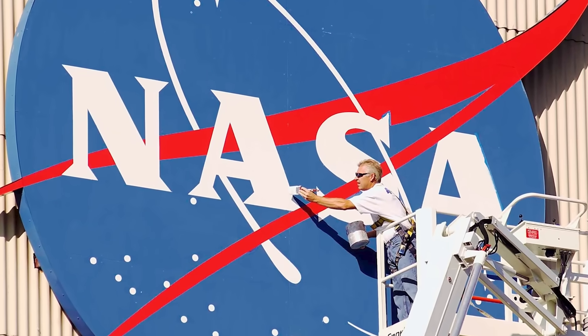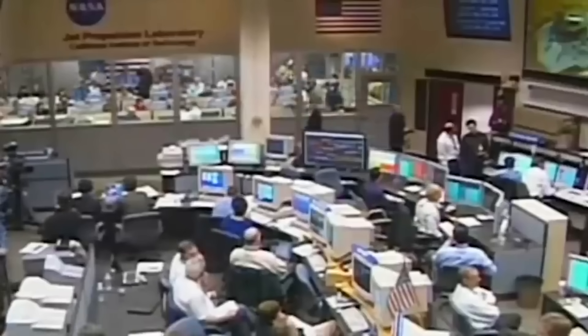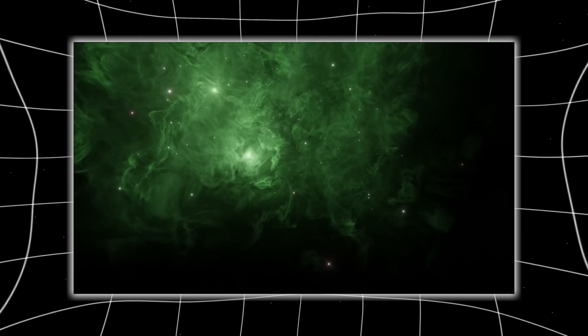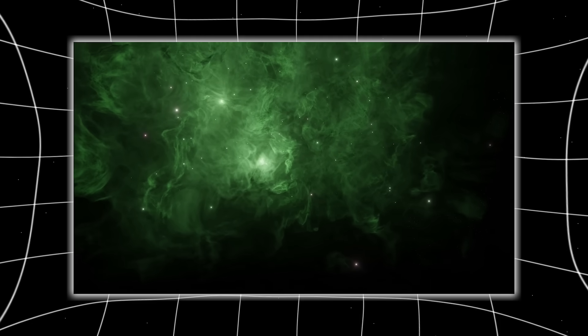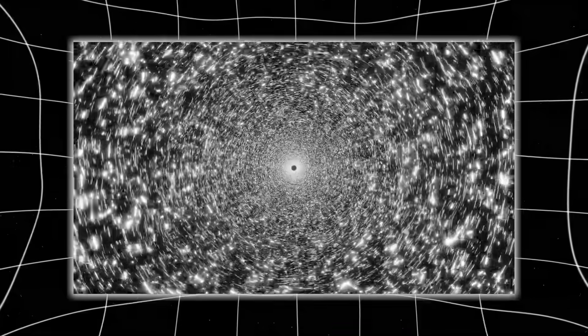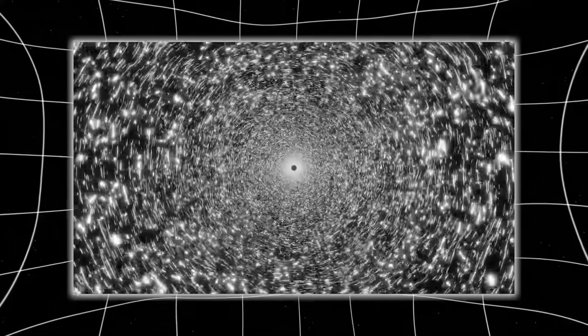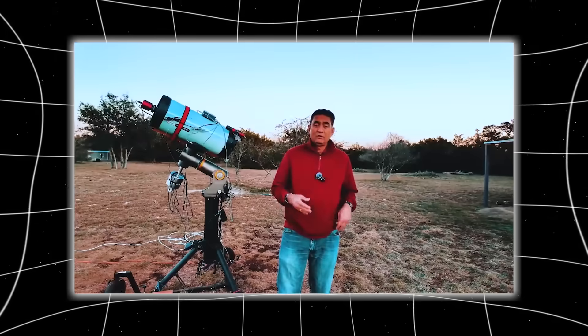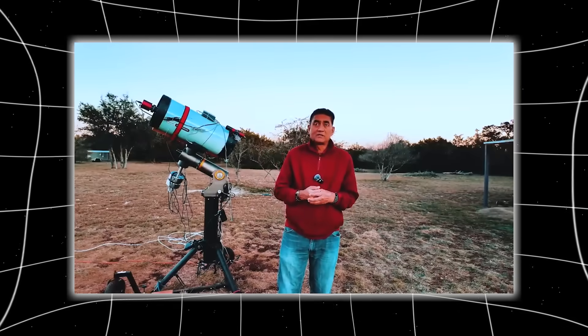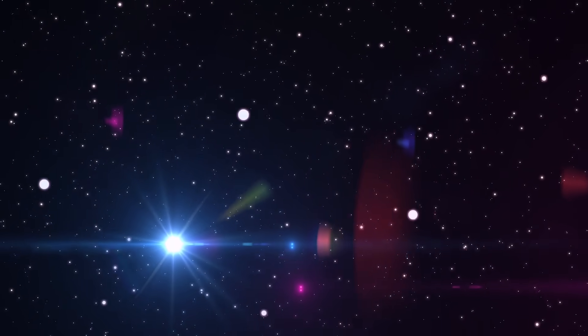Ray begins his video almost casually, saying NASA missed a lot of stuff in their press conference about 3i Atlas, but the reality behind that understatement is staggering because what he found wasn't minor detail. Ray is not a government lab, not a multi-million dollar observatory. He is one person with a telescope, the night sky, and a knack for catching what others overlook.